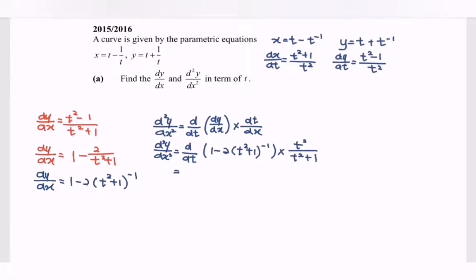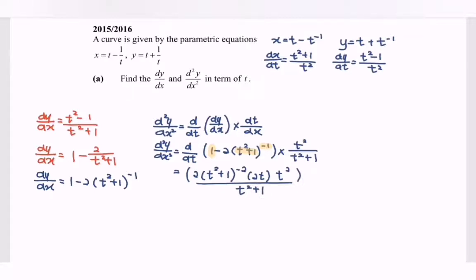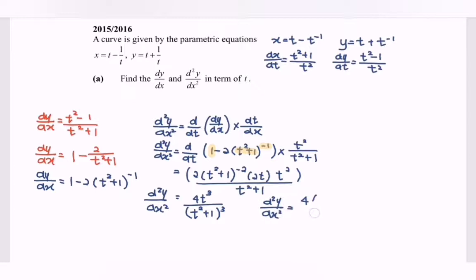Differentiating, we get 0 from the constant. Then negative 1 multiplied with negative 2 gives 2 bracket t squared plus 1 to the power of negative 2. Remembering to differentiate the internal function, we multiply by 2t. Multiplying with t squared over t squared plus 1, and simplifying, the second derivative equals 4t cubed over t squared plus 1 to the power of 3, which simplifies to 4t over t squared plus 1 to the power of 3.